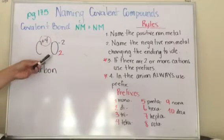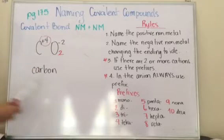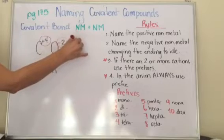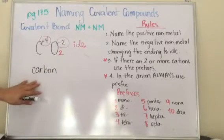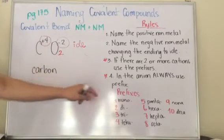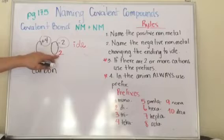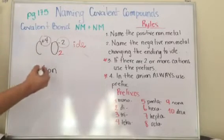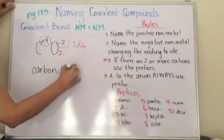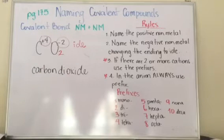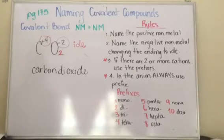Which is the negative? Oxygen. And to oxygen, since oxygen is the negative, I need to change the ending to -ide. But it also says in anions, we also use prefixes. What number do we have here? A two. What is the prefix of two? Di. So it's carbon dioxide. This is the name of CO₂: carbon dioxide. This is how we name covalent compounds.